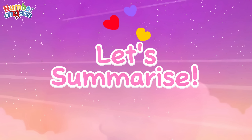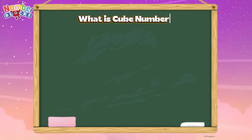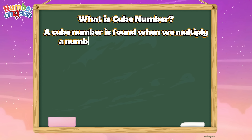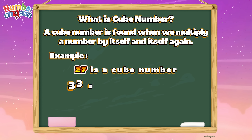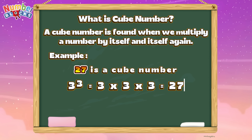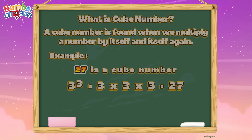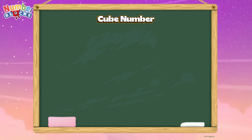Now join me and let's summarize. What is a cube number? A cube number is found when we multiply a number by itself and itself again. For example, 27 is a cube number. Therefore, 3 cube is equals to 3 times 3 times 3, or is equals to 27. Let's check out cube numbers.